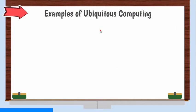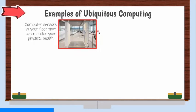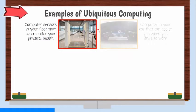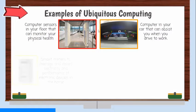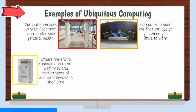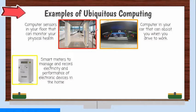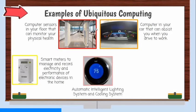Here are some examples of ubiquitous computing. Computer sensors in your floor that can monitor your physical health. Computer in your car that can assist you when you drive to work. Replacement of old electric meters with smart meters. Smart meters are tools used to manage and record electricity and performance of electronic devices in the home. One of the advantages of smart meters is it eliminates manual monthly meter readings. Automatic intelligent lighting and cooling systems. The ubiquitous computing environment might interconnect lighting and environmental controls with personal biometric monitors woven into clothing.